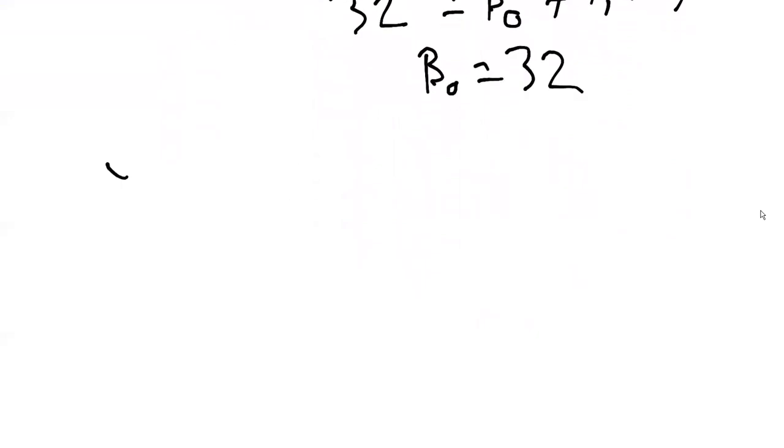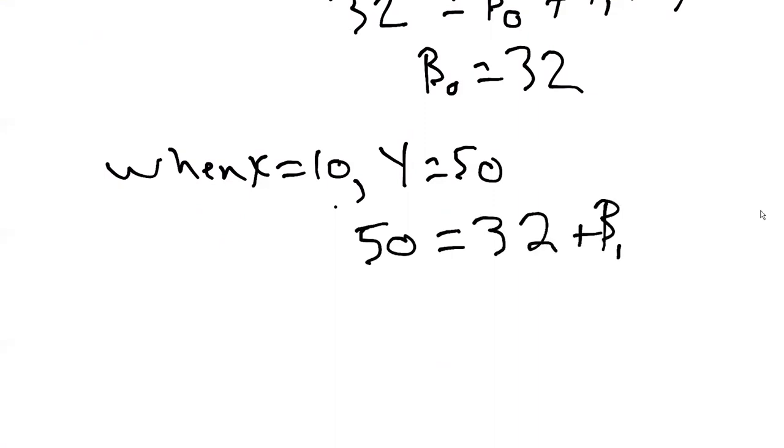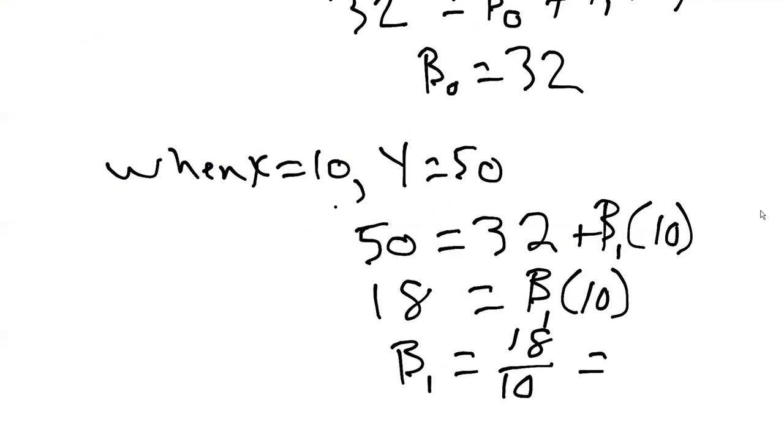What about when x equals 10? We know that y equals 50. When it's 10 degrees Celsius, it's 50 degrees Fahrenheit. We can plug these values into the equation. Here 50 would equal 32 plus beta 1 times 10. Then we can rearrange and get 18 equals beta 1 times 10. Then we can find beta 1 equals 18 divided by 10, or that equals 1.8.